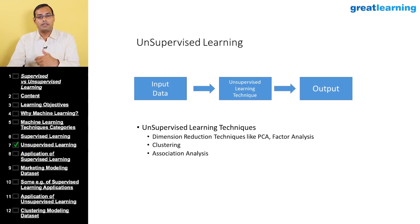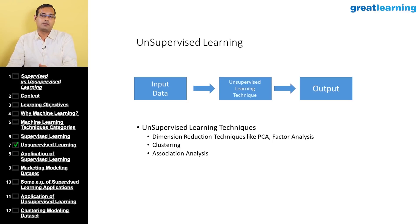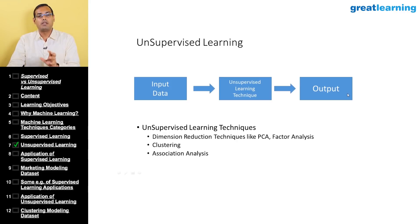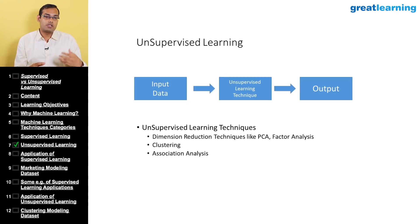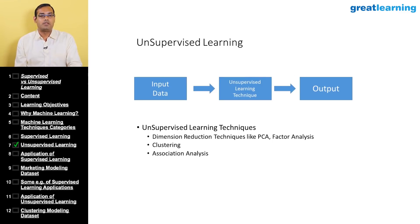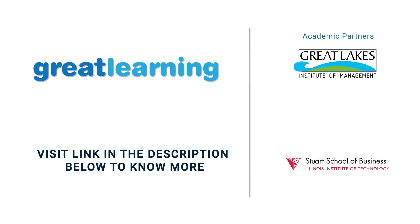In unsupervised learning, the output can be used directly for understanding or as input to a subsequent technique, but there is no model produced. You cannot apply a model to future records. This is one of the key differences between supervised and unsupervised learning.